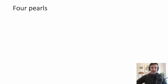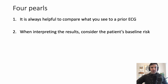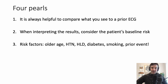Here are the four main pearls. Number one: it's always helpful to compare what you see to a prior ECG. If the current ECG shows ST elevation, but ST elevation was seen a week or month ago, you're a lot less worried. When interpreting results, always think about the patient's baseline risk. Risk factors for myocardial infarction include older age, high blood pressure, hyperlipidemia, history of diabetes, smoking, and of course a prior event. If they're telling you their current chest pain feels just like when they had their heart attack five years ago, you want to take that very seriously.